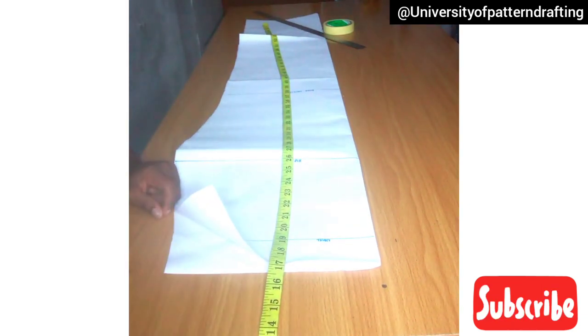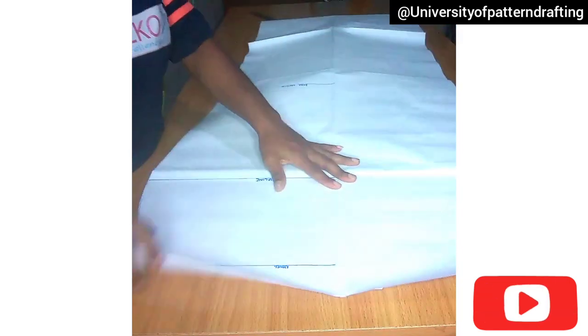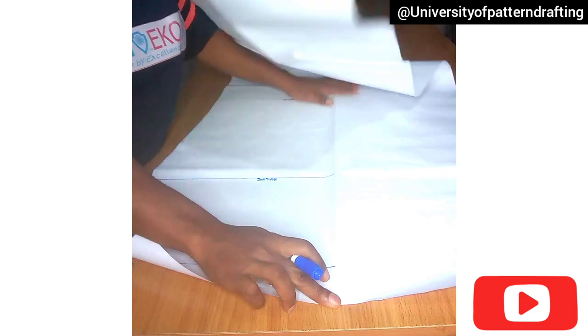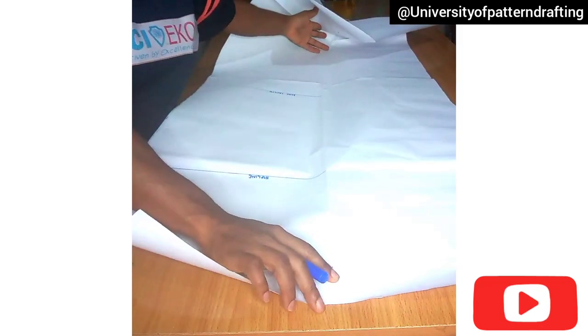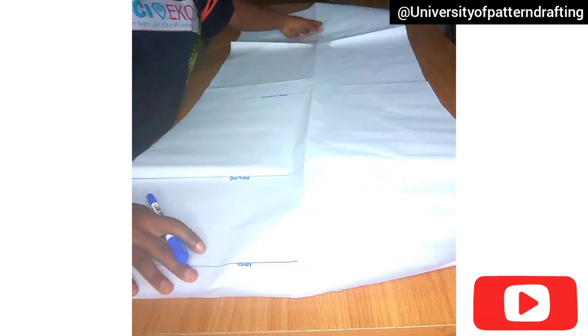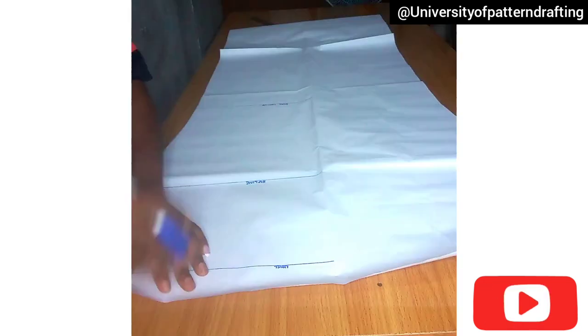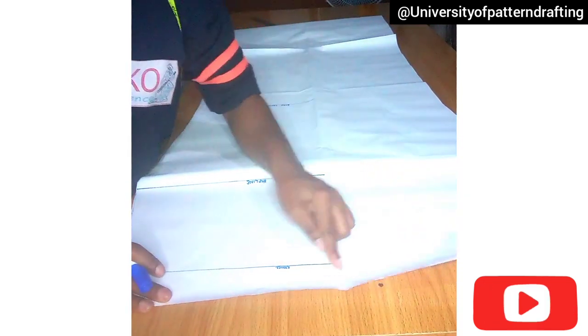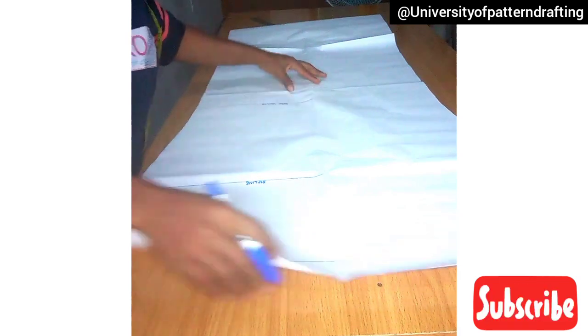This is the front part. I'm just going to go ahead and place this on the pattern paper. The folded area is actually the center of my pattern paper.